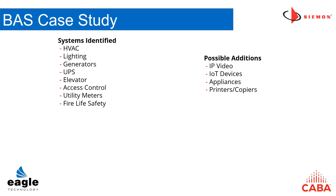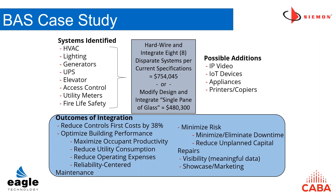Here's an example of a project I'm currently involved in. When we talked to the customer about the systems they were putting in their building, we identified HVAC, lighting, generators, UPS, elevators, access control, utility meters, and life safety, plus some additional systems that could also be integrated on the building automation system. When we looked at that, we were able to come up with almost $480,000 in savings for that project. We reduced their controls first cost by 38 percent.